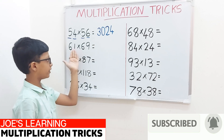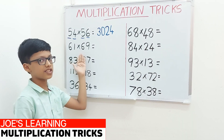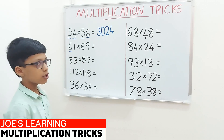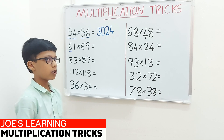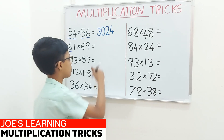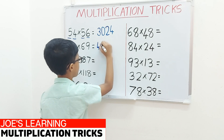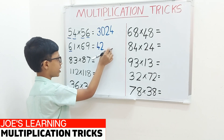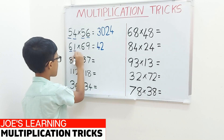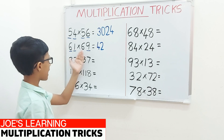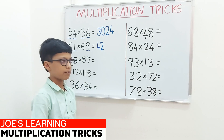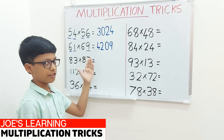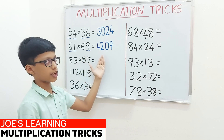Now let's move on to the example 61 multiplied by 69. We have to first look at the digit in the tens place, which is 6. So we have to multiply it with the next number. 6 multiplied by 7 equals 42. Write it down as the first two digits of your product. Now to find the next two digits, multiply the digits in the ones place, 1 and 9. 1 multiplied by 9 is 9. But you have to write a two digit number, so add 0. So 61 multiplied by 69 equals 4209.